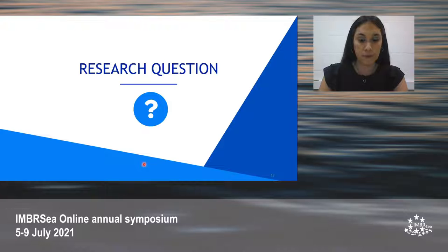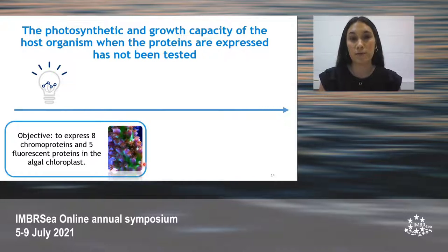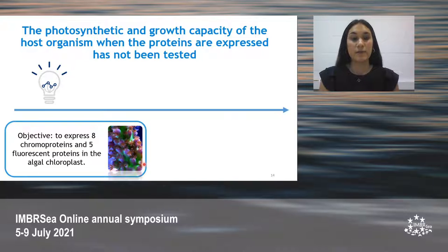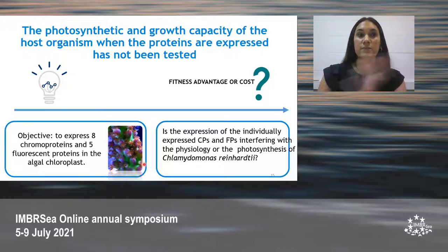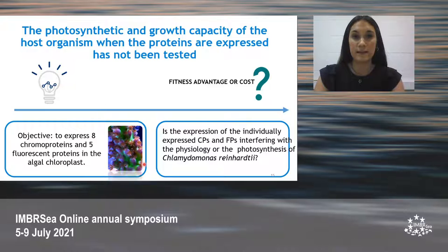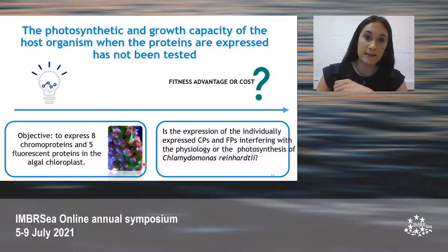Now, I would like to focus on the research questions of my project. Despite the fact that biotechnology in algae has heavily relied on the use of fluorescent protein reporters, including the chromoproteins, the photosynthetic and the growth capacity of the host organisms has not been tested when these proteins are being expressed. Our objective was to express 8 chromoproteins and 5 fluorescent proteins in the algal chloroplast to see if this might lead to a change in the absorption or in the photosynthetic capacity of the algae, since these proteins are absorbing and emitting light at different wavelengths. Is the expression of the proteins presenting a fitness advantage or representing a fitness cost for the algal cells?